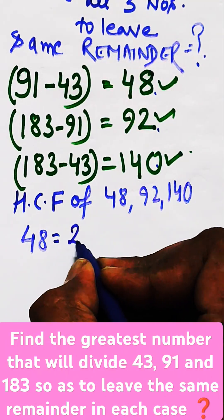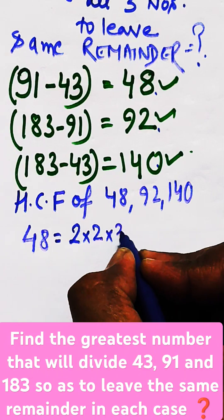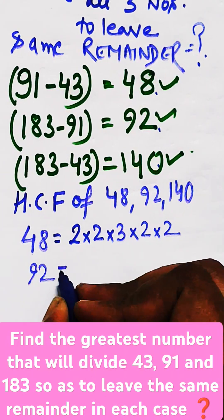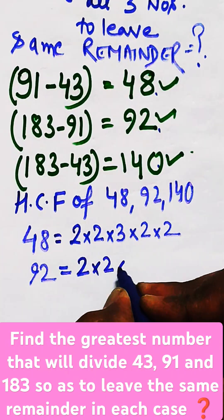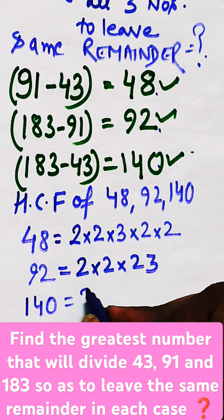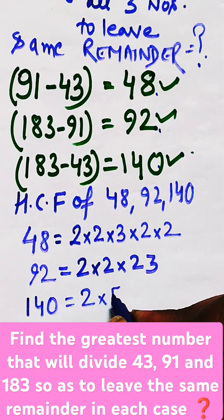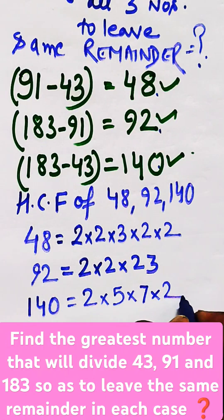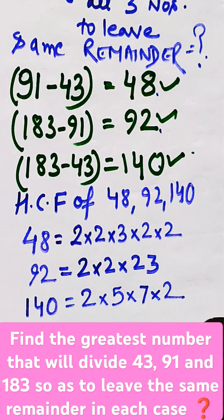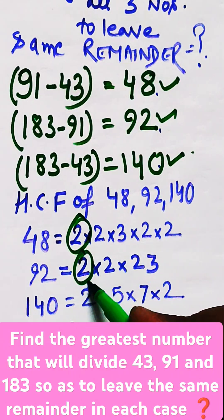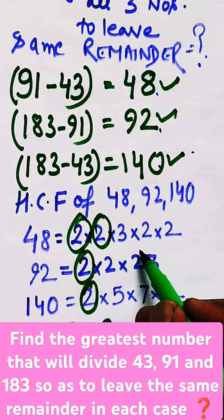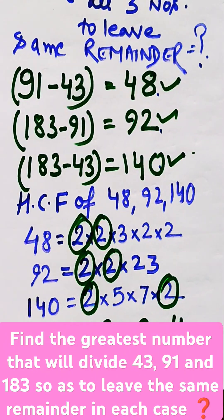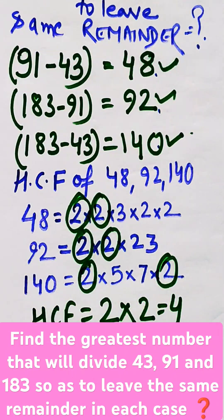The factors of 48 are 2 × 2 × 3 × 2 × 2. The factors of 92 are 2 × 2 × 23. And the factors of 140 are 2 × 2 × 5 × 7. Looking at the common factors among all three, we see that 2 is common in all three, and again 2 — no other number is common. So 2 × 2 = 4. Therefore, 4 is the greatest number which when divides all three numbers leaves the same remainder.